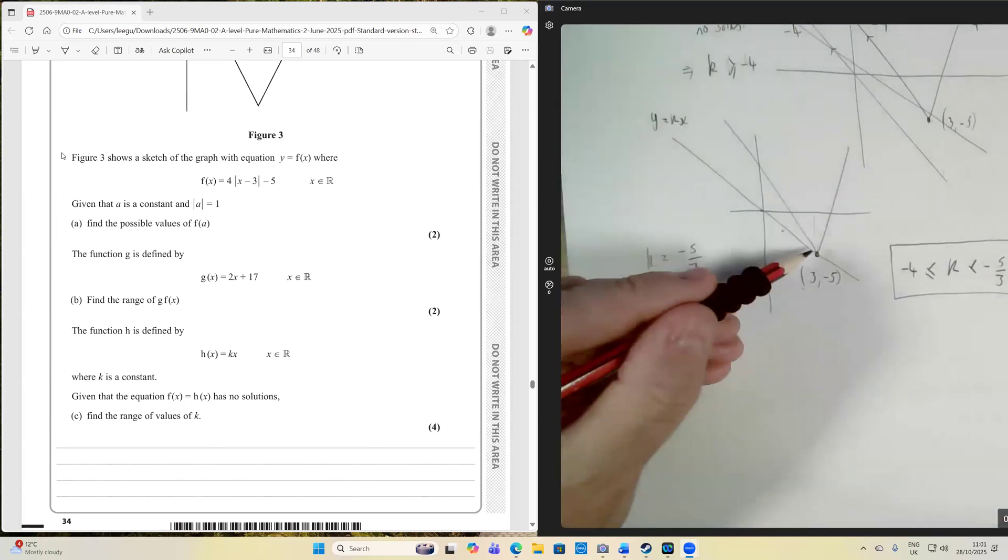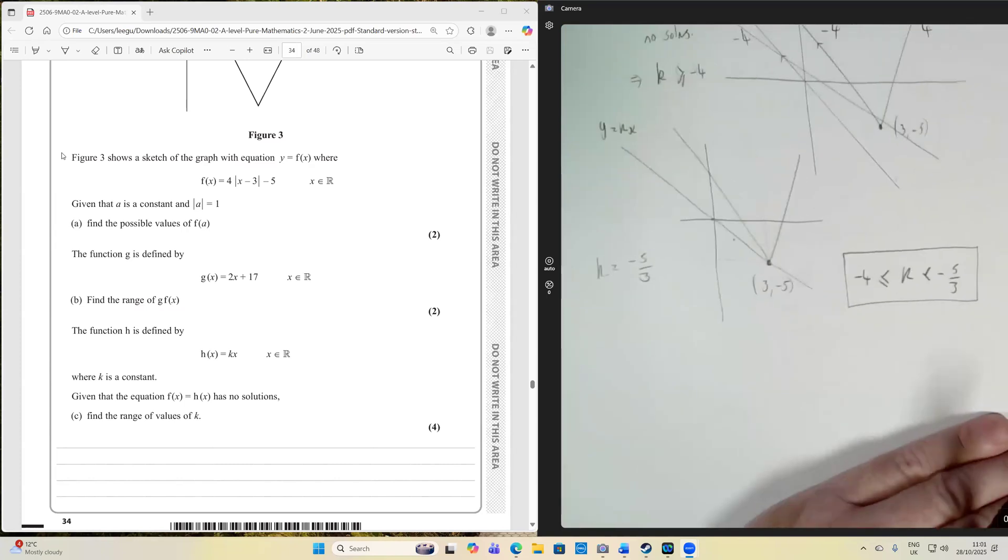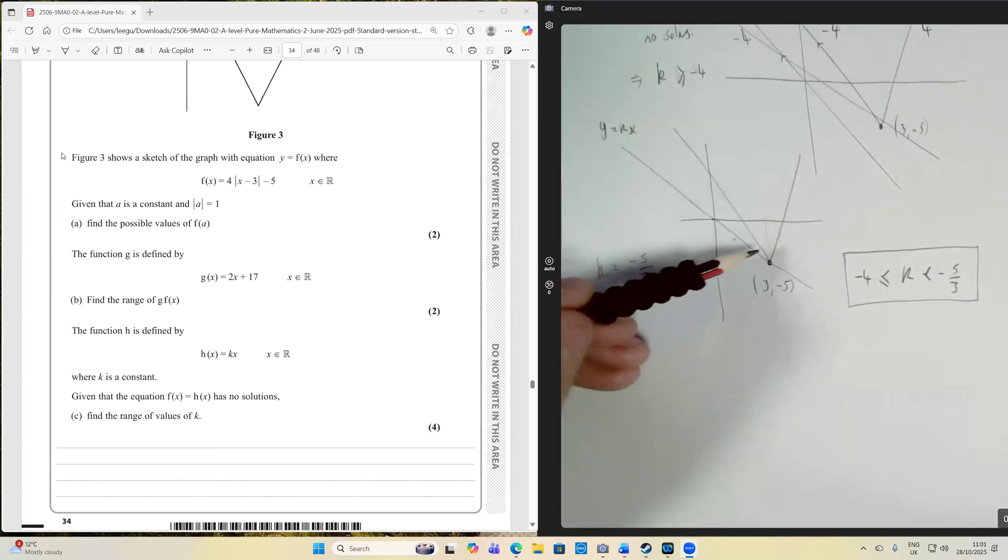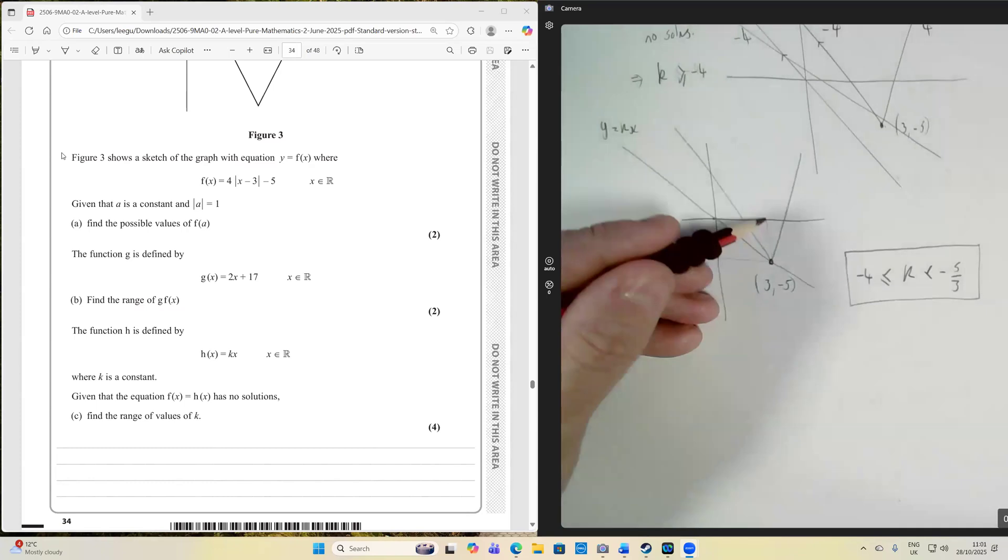Well, from this, we know the coordinate of this vertex, as we discussed earlier in the question. So we can find the gradient of the line at this point, which is just going to be rise over run. So the change in y is minus 5, and the change in x is 3. So this corresponds to a gradient of minus 5 over 3.